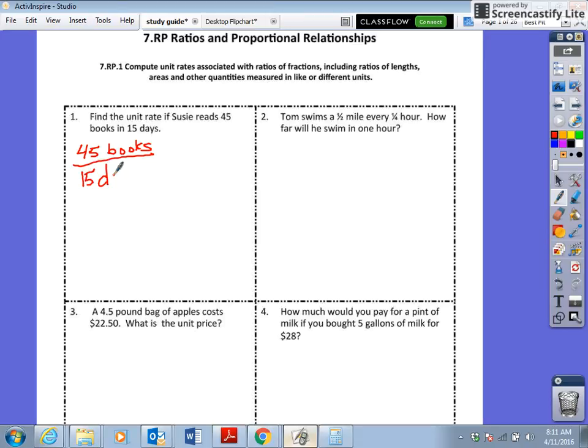The unit rate, anytime I ask for the unit rate, wants to know how many in one day. Whatever the bottom number is, it wants to know how many in one day. So all you would do is divide 45 by 15. You just take this top number and divide it by the bottom number, just like you would a percent or to find a decimal.